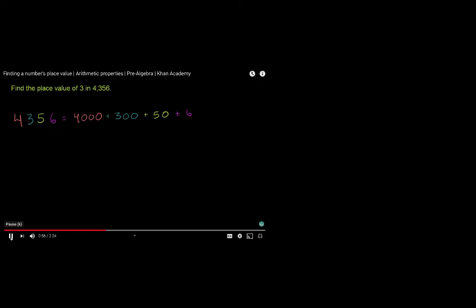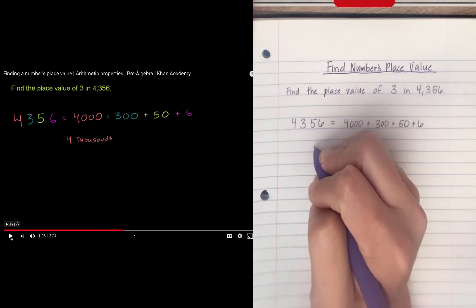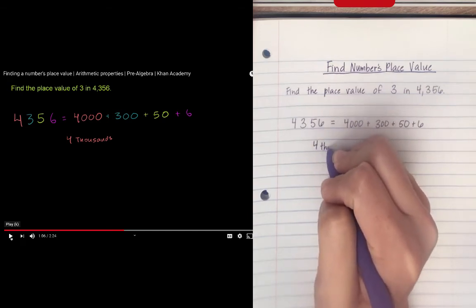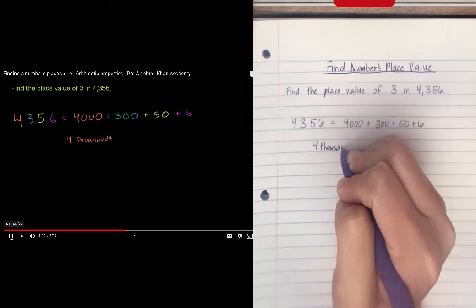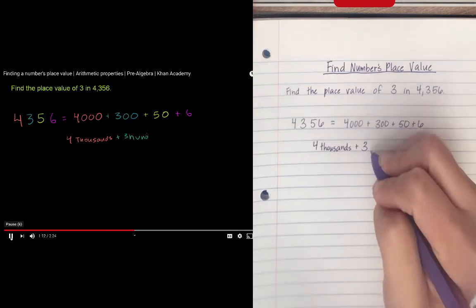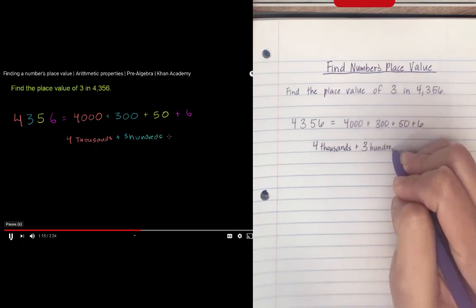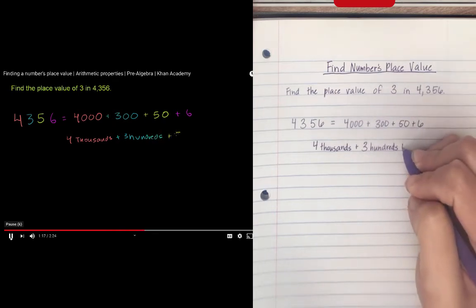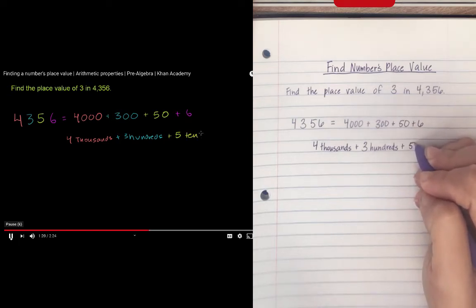Now another way to think about this is this is just like saying, this is 4,000. Again, I'm pausing it so I can write it down. 4,000 plus, or you could even think of and, so plus 300, plus 50. You could think of it as 5 tens, and instead of 6, we could say plus 6 ones.